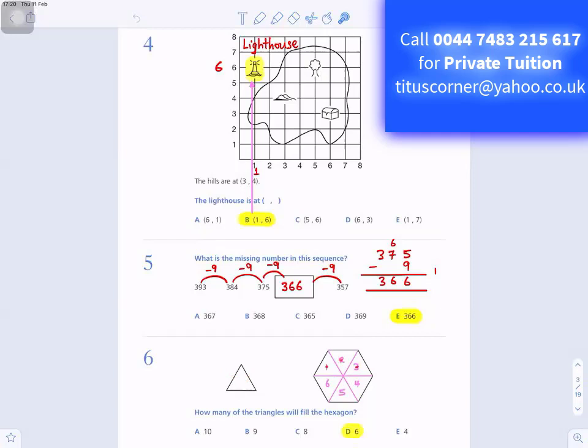So there's 1, 2, 3, 4, 5, 6 of them. So the answer is D, 6. There are 6 triangles.